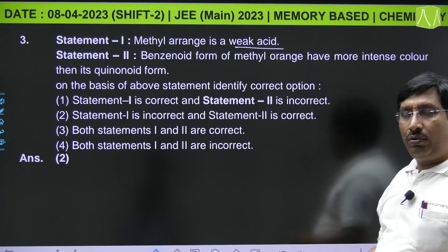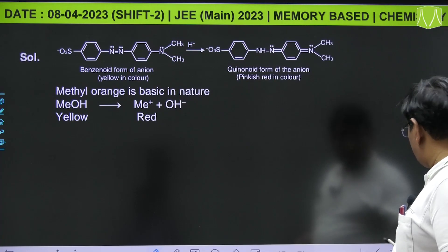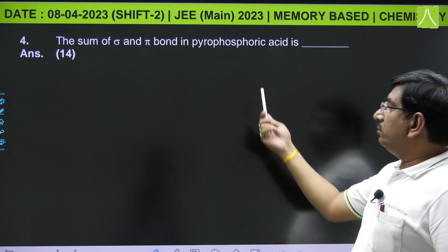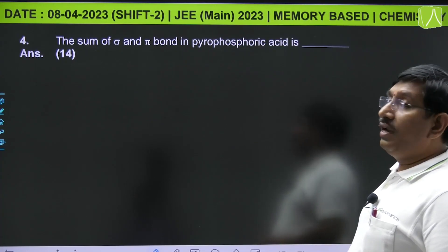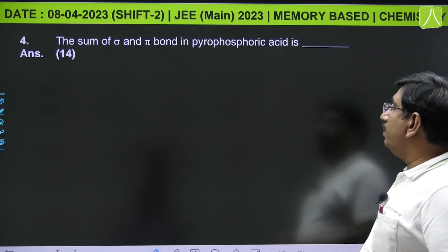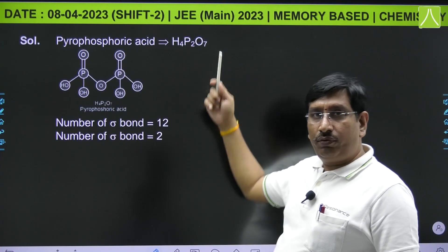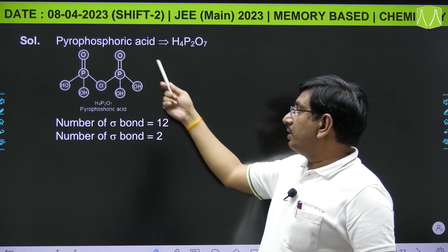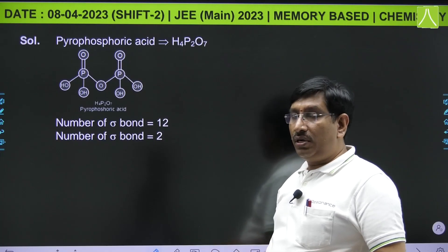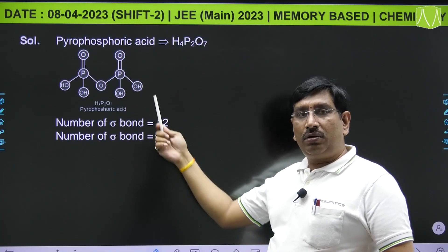Next question from p-block: the sum of sigma and pi bonds in pyrophosphoric acid. Pyrophosphoric acid formula H₄P₂O₇. The number of sigma bonds are 12 and pi bonds are 2, total equal to 14.